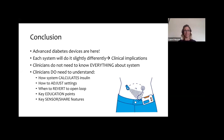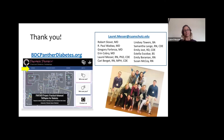In conclusion, advanced diabetes devices are here, and it's important that we as clinicians have a framework for how to think about them. Each system will do things slightly differently, including systems within the same class, and there are clinical implications for that. We do not have to know everything about these systems, but we do need to understand on a high level how they calculate insulin delivery, how we can make adjustments, when to revert to open loop therapy, key education points for each device, and important differences between sensor and share features. Thank you very much. The BDC Panther Diabetes website is available, and my personal email is provided if you have any questions or want to discuss advanced diabetes devices further.